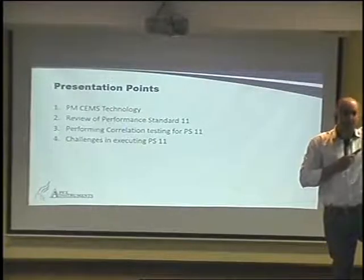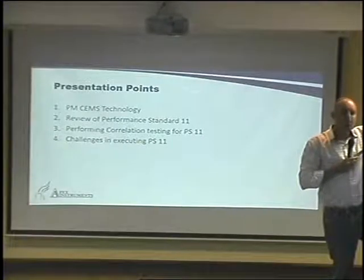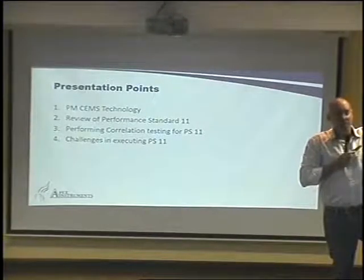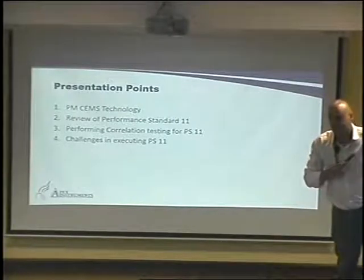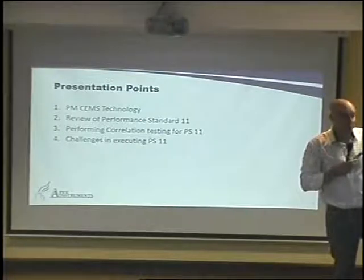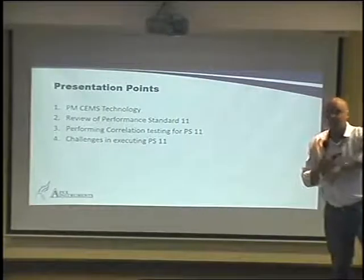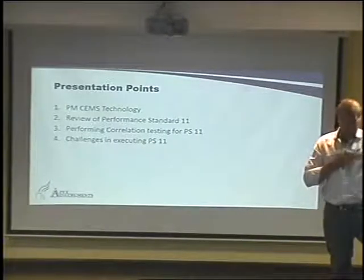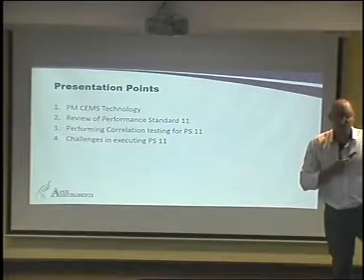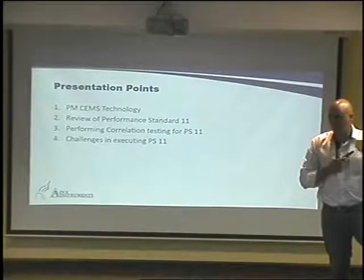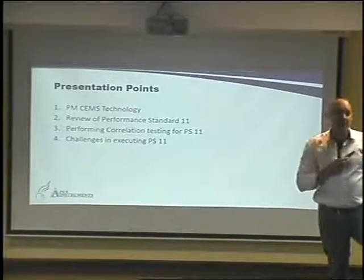Method is the standard — it is the best level of accuracy. The performance standard is using that method to check another instrument. We're going to talk about Performance Standard 11 here, and then after the break you'll hear PS 12A and 12B for mercury. They are also performance standards where you use Method 30B for mercury to test their accuracy.